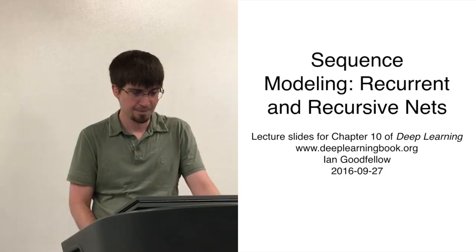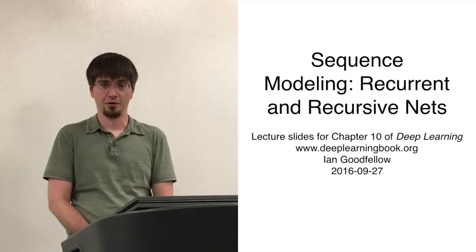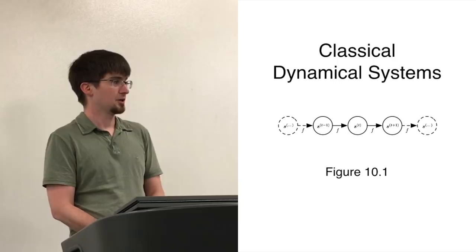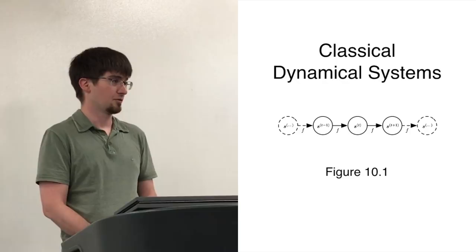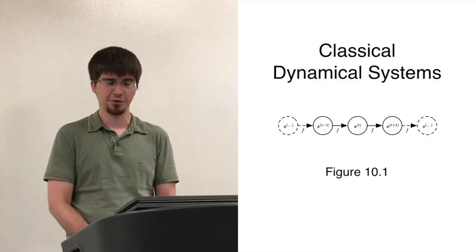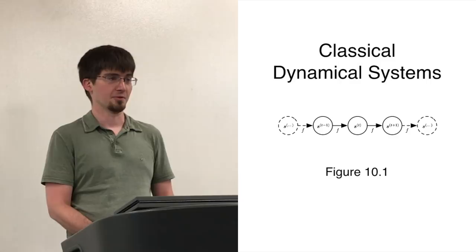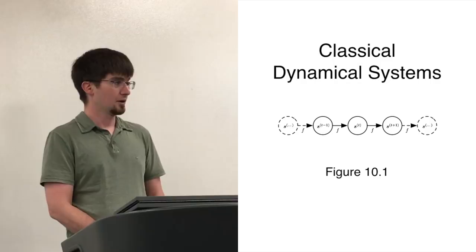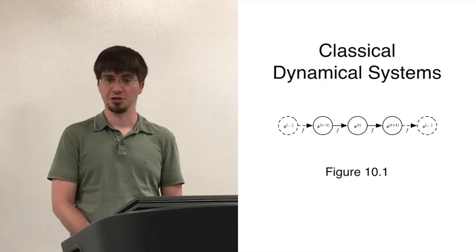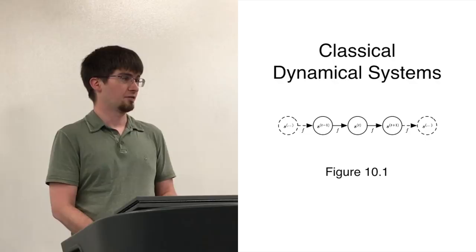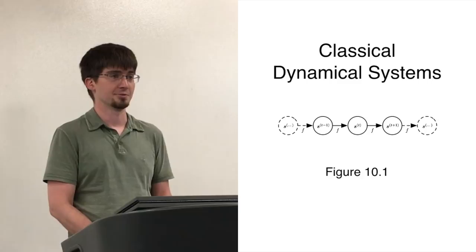We can think of recurrent neural networks as being a kind of dynamical system. A dynamical system is just anything we might study in math or engineering where we describe the system with some state variable S — a vector. We have different discrete time steps, and we can look at the state of this vector at many different integer value points in time. We control the dynamics using a function f. At every time step, we apply f to the current state, and the output gives us a new state. When we know what the world is like at time t, we can figure out what it will be like at time t+1 by applying f. Applying f several times moves us several time steps forward.